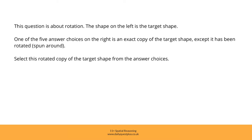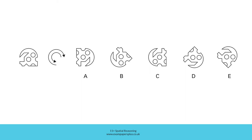Now you can try a second similar question. Remember, this question is about rotation. The shape on the left is the target shape. One of the five answer choices on the right is an exact copy of the target shape, except it has been rotated, spun around. Select this rotated copy of the target shape from the answer choices. When you're ready, pause the video and try to work out the right answer within 30 seconds. When you've finished working, resume the video and we'll check the answer together.